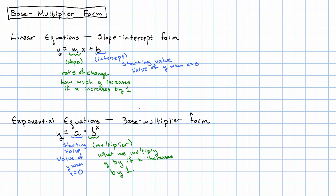So in the slope-intercept form, m is the number that's repeatedly added. In the base multiplier form, b is the number that's repeatedly multiplied.